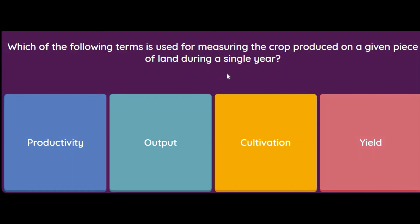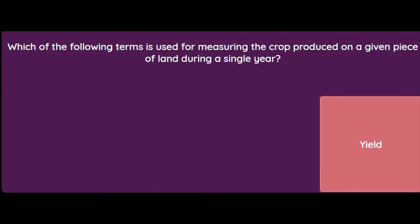Which of the following terms is used for measuring the crop produced on a given piece of land during a single year? Productivity, output, cultivation, or yield? The answer is yield.